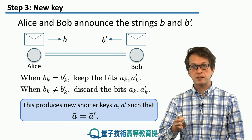So far we have only considered the ideal scenario with no eavesdropper. Now let's say that somebody is listening to both the public classical channel and the public quantum channel. We are going to consider the effect of an eavesdropper, who we will name Eve, and see what effect that has on the protocol and how the protocol can actually discover the presence of such an eavesdropper.